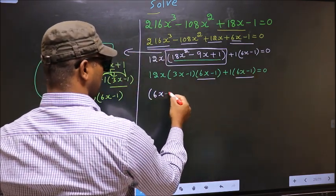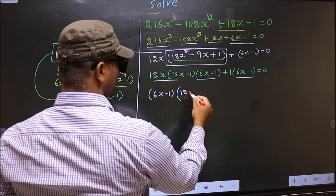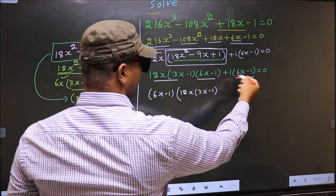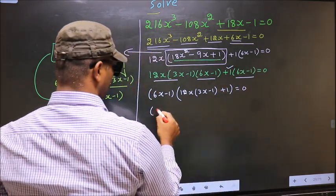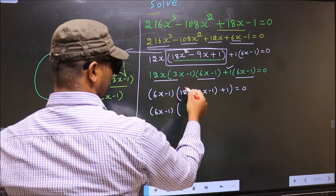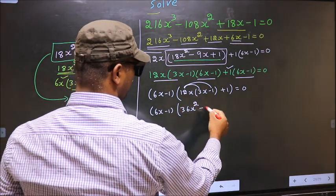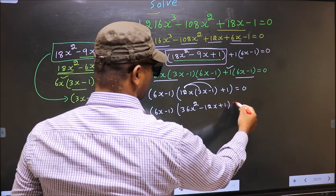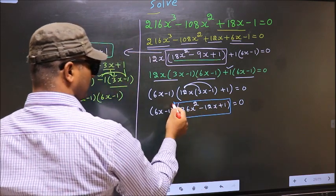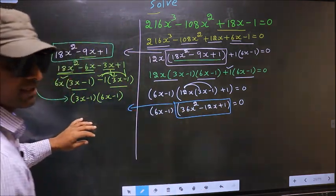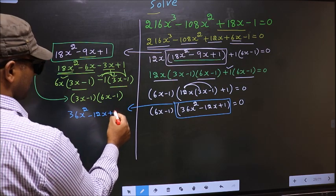So write (6x minus 1) outside. Inside you are left with 12x times (3x minus 1) plus 1, equal to 0. Now open up the brackets: (6x minus 1) times (36x² minus 12x plus 1) equal to 0. Now we have got a quadratic.